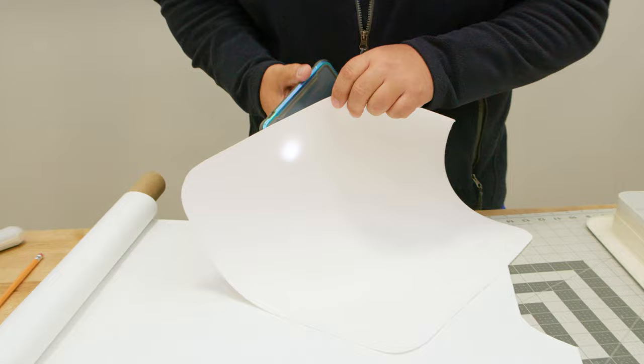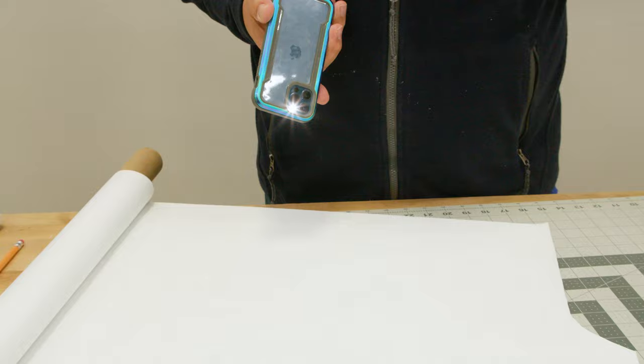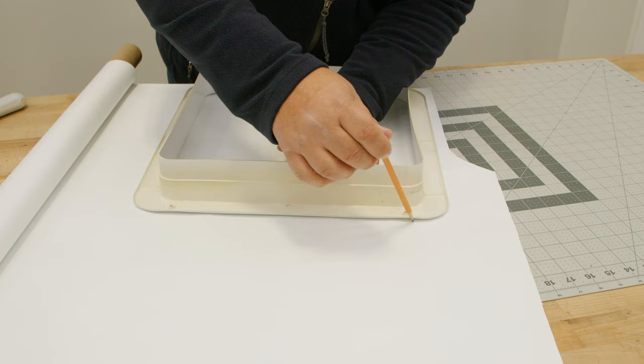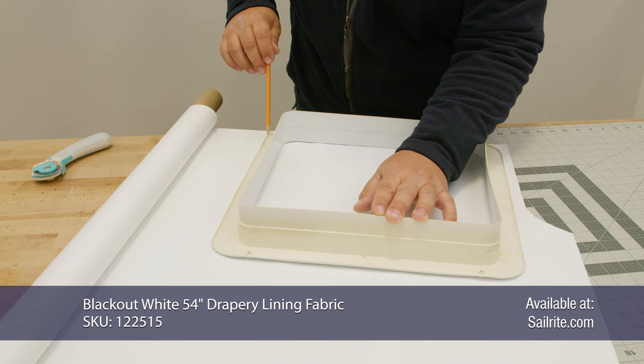This is the Sunbrella Marine Grade fabric with a light - as you can see it does shine through. This is a blackout fabric and notice the light is completely blocked by the blackout fabric, so we're going to use this for the underside. Sailrite has several blackout fabrics that you can select from. This one is a white on white.